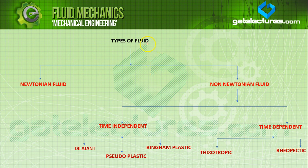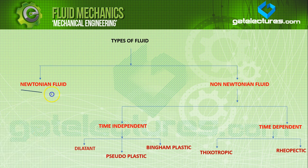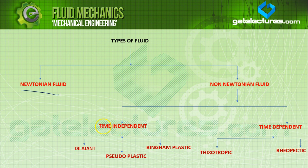The types of fluid are divided into two parts: Newtonian and non-Newtonian. Newtonian fluid we have seen a little bit in the last lecture; today we will see the detailed version. Non-Newtonian fluid is further divided into two parts: time independent and time dependent. The time independent non-Newtonian fluid is further divided into three types: dilatant fluid, pseudoplastic fluid, and Bingham plastic fluid. Time dependent fluid is further divided into two parts: thixotropic and rheopathic.